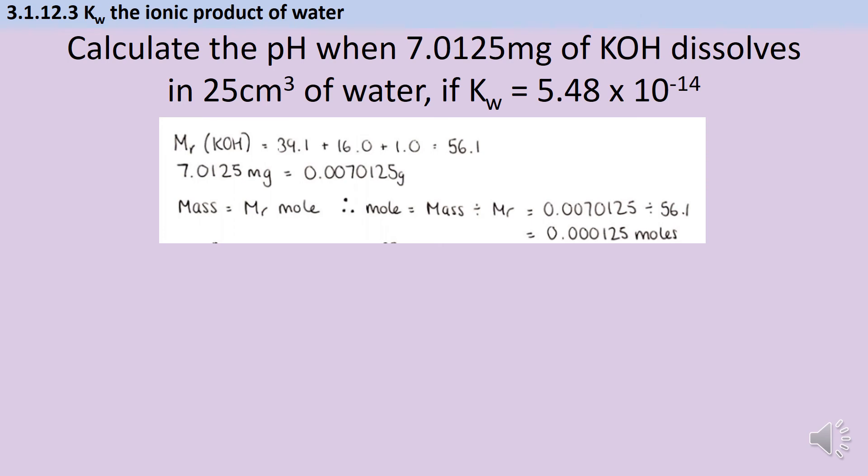Now I can take the number of moles and divide it by the volume in decimetres cubed to give a concentration. So rather than just using 25 centimetres cubed, I'm going to need to divide that by 1000.